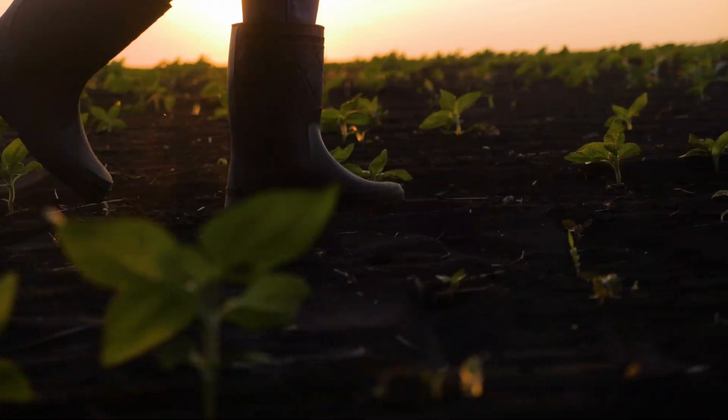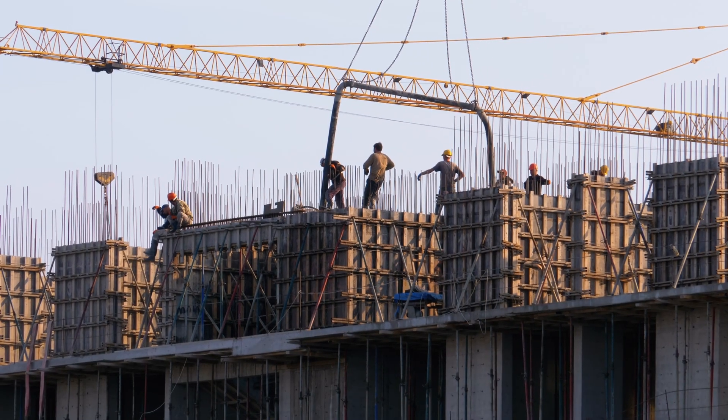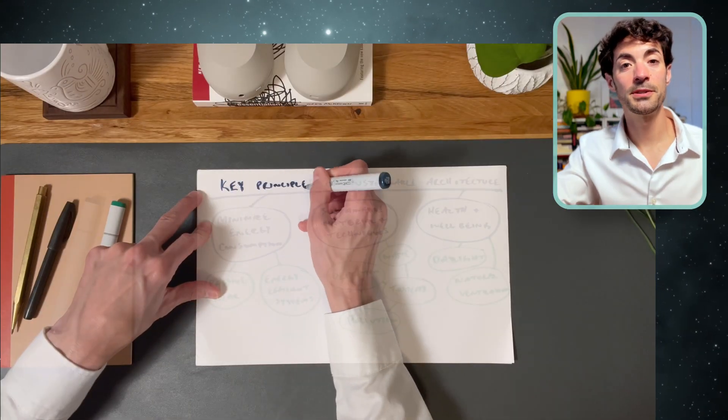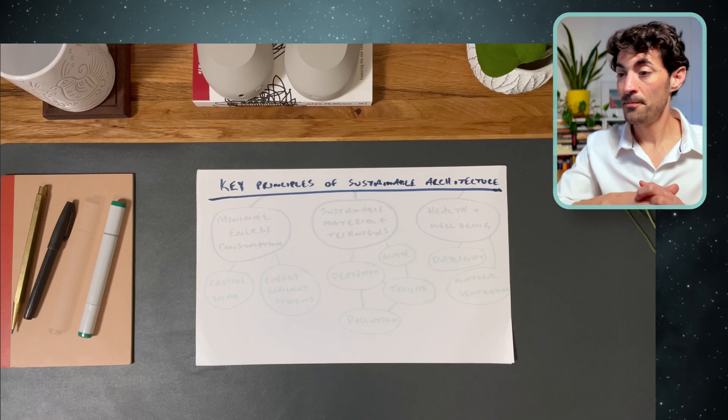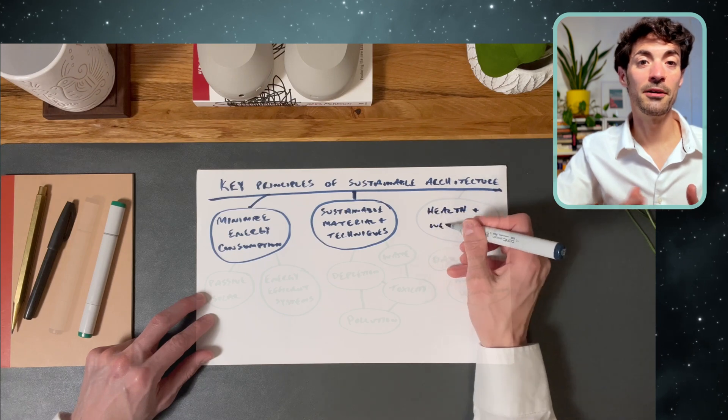Design theory number three is sustainability. This theory highlights the critical need to design buildings using materials and technologies that minimize our impact on the planet. This approach is increasingly important as we see the impact of climate change, and the construction industry is one of the biggest contributors. The key principles for sustainable architecture are that design should minimize energy consumption, use sustainable materials and construction techniques, and promote the health and well-being of occupants.